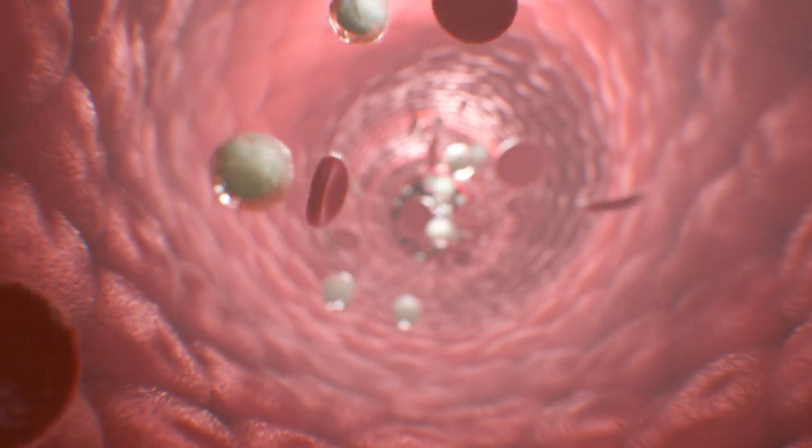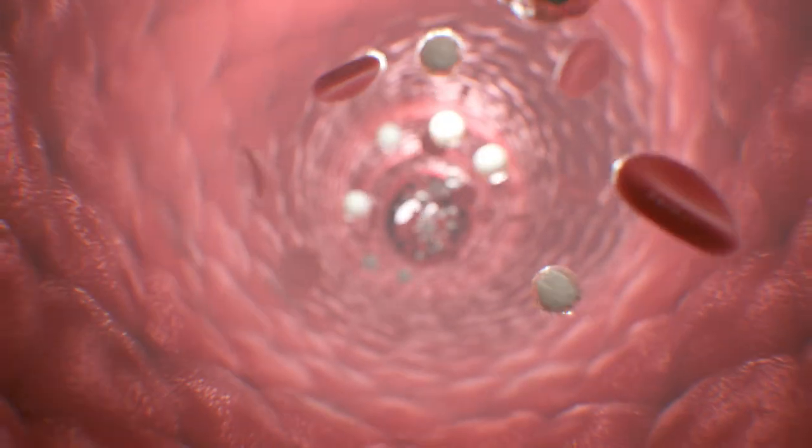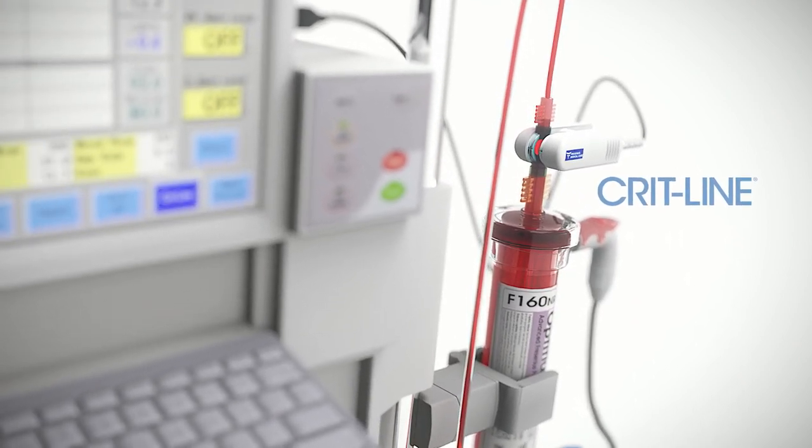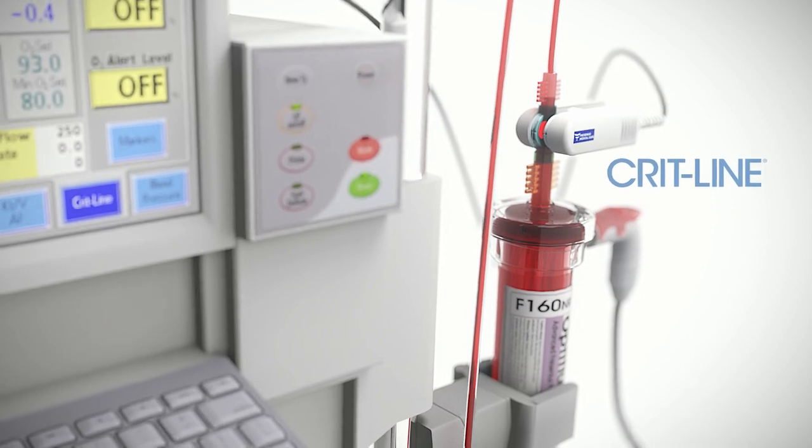Therefore, changes in blood volume and hematocrit can be used as indicators of effective hemodialysis. Crit-line technology can continuously and noninvasively measure these parameters to limit intradialytic symptoms.